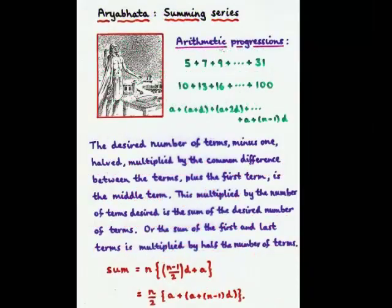So let's look at these. One of his main contributions was to sum various arithmetic series for example if we look at an arithmetic progression such as 5 plus 7 plus 9 plus dot dot plus 31 or this one here then you can find the sum of all the numbers in it according to Aryabhata the desired number of terms minus 1 halved multiplied by the common difference between the terms plus the first term is the middle term. This multiplied by the number of terms desired is the sum of the desired number of terms. Well that's not exactly user friendly from our point of view but it was a description in words. Of course the algebraic notation that we use today wasn't available. But another version that he gave is you take the sum of the first and last term you multiply it by half the number of terms so this gives you the expressions that we use now.